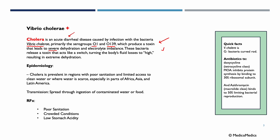These bacteria release a toxin that acts like a switch, turning the body's fluid losses to high, resulting in extreme dehydration. Cholera is prevalent in regions with poor sanitation and limited access to clean water.